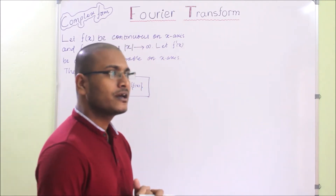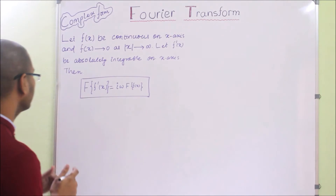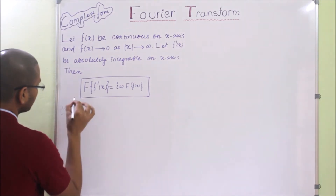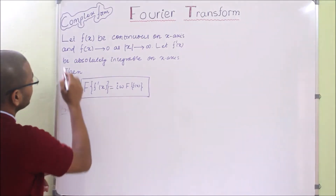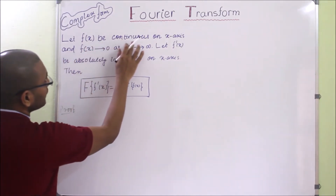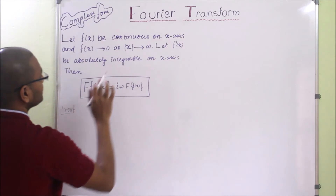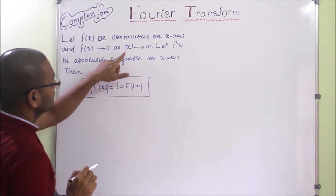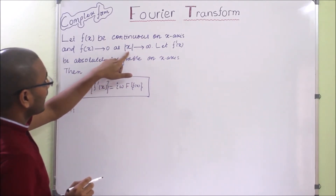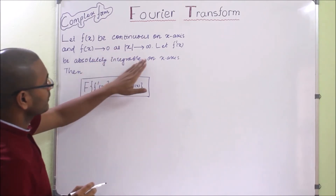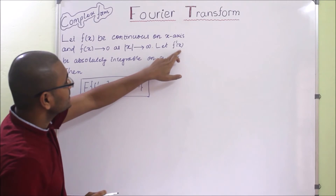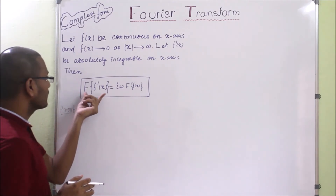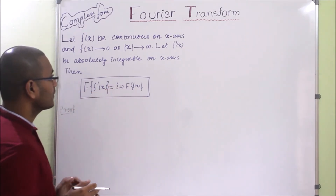First we will see how to derive the formula. Before deriving it, we need to look at the statement. The statement says: let f(x) be a continuous function on the x-axis, and f(x) tends to 0 when |x| tends to infinity — meaning x tends to +∞ and x tends to −∞. Let f'(x) be absolutely integrable on the x-axis. Then the Fourier transform of f'(x) equals iω times the Fourier transform of f(x).